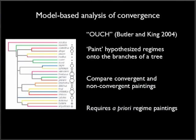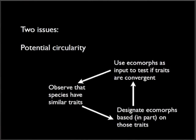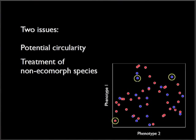This method requires that the user specifies their hypothesis a priori. In other words, we have to decide which lineages we think are convergent. This may be a problem in some cases for a couple of reasons. First, if we initially identified ecomorphs based on their observed similarity to one another, there's an element of circularity if we paint regimes onto the tree based on ecomorph status and then test whether ecomorphs are in fact convergent. And second, not all species may fall into a defined category, and there's not always an obvious way to treat these non-ecomorph taxa.